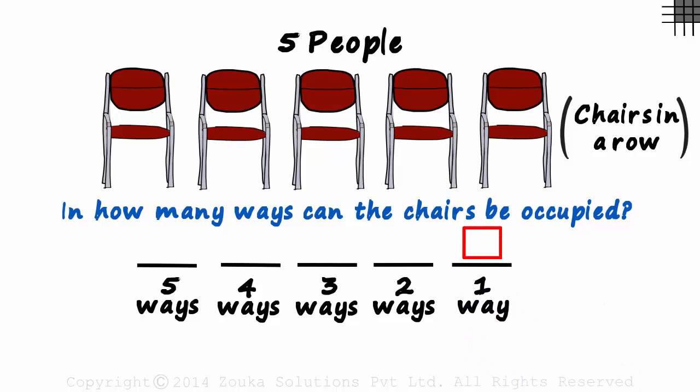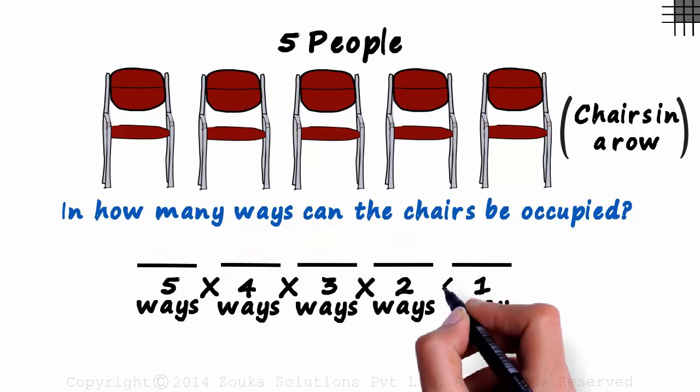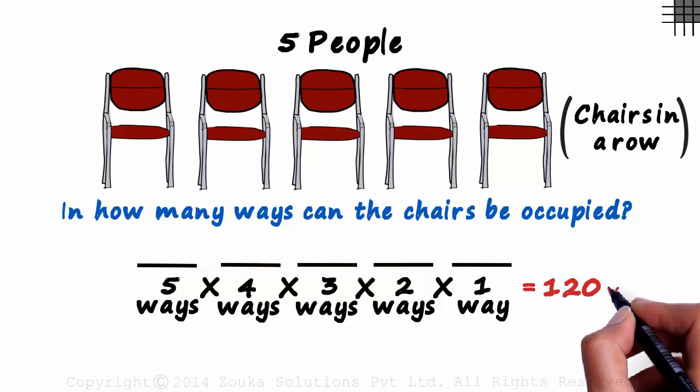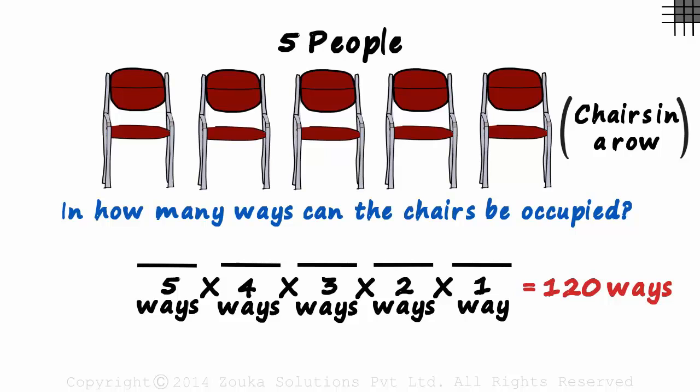One way in which the fifth chair can be occupied if four people are seated in the initial four. And to get the answer, we multiply these ways. Five times four is twenty. Twenty times three is sixty, and sixty times two is one hundred and twenty. One hundred and twenty ways is the answer. One hundred and twenty ways in which five people can occupy five chairs.